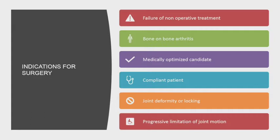Regarding indications for surgery: first, failure of non-operative treatment — everyone must fail non-operative treatment before proceeding. Nobody gets a knee replacement on the first visit. They must have bone-on-bone arthritis or at least a significant osteochondral lesion, be medically optimized, and be compliant. Compliance is probably one of the biggest factors — patients must understand upfront this is a three-month recovery and a year for full recovery.